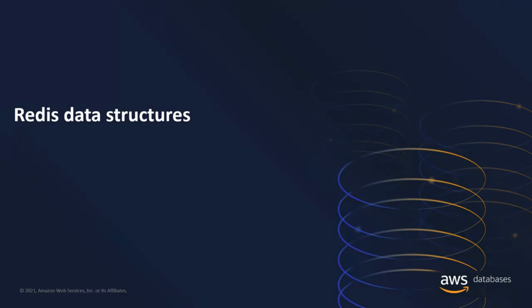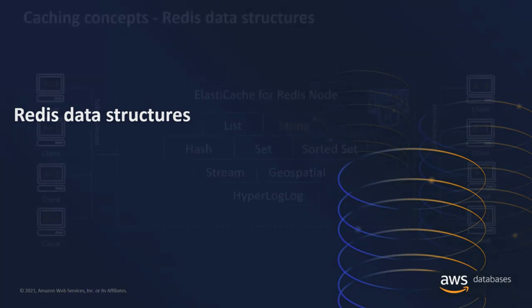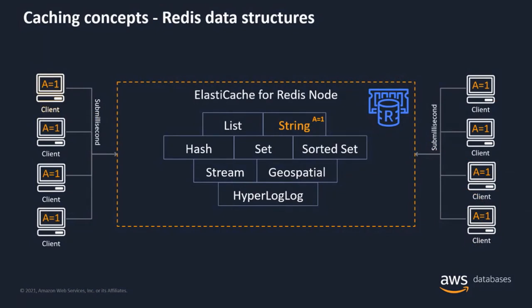Let's quickly walk through Redis data structures. ElastiCache for Redis uses Redis as its engine. Redis is not a plain key-value store — it is actually a data structure server. Redis provides many advanced data structures that can be used to store simple to complex data elements as values. The data structures include string, list, hash, set, sorted set, streams, hyperloglogs, and geospatial.